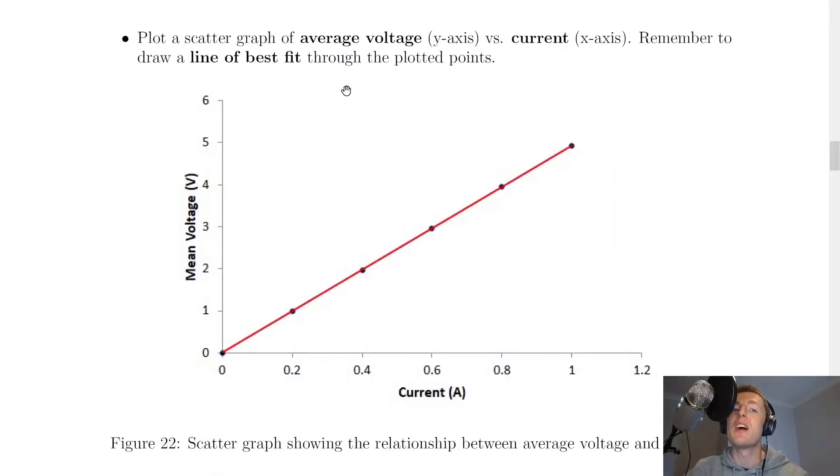What you would then do is plot a scatter graph of average voltage or mean voltage on the y-axis versus current in amps on the x-axis. And it says remember to draw a line of best fit through the plotted points. Now you'll notice here that I've got a straight line that goes through the origin. Yours might not go straight through the origin, and that's okay, there will be reasons for that. And your points might not also lie in a complete line, but remember that's the point of a line of best fit, is to fit them through the majority of the points.